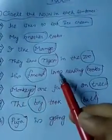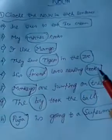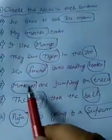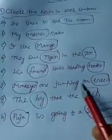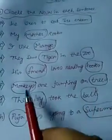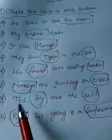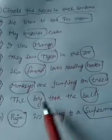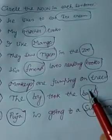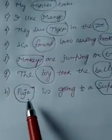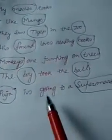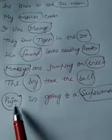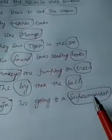His friend loves reading books — friend and books. Monkeys are jumping on trees — monkeys and trees. The boy took the ball — boy and ball. Pooja is going to a supermarket — Pooja and supermarket.